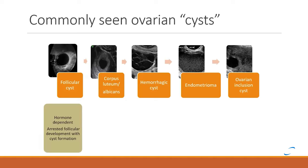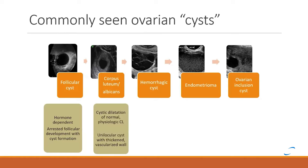A follicular cyst is hormone dependent and develops because of arrested follicular development. When the follicle stops growing, there is a lot of fluid in the sac, and if you image the patient at that point you're going to see that — and that's just normal physiology.